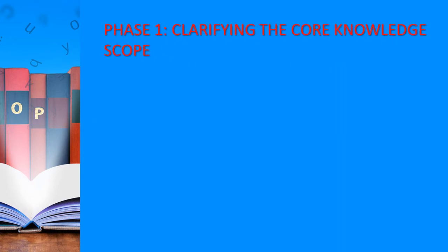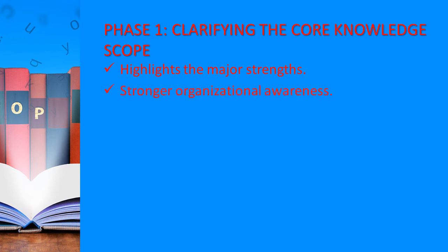Many knowledge organizations fail to recognize the importance of clarifying their core knowledge scope. They allow the business to evolve into a range of areas and specialties which may or may not be of value. Clarifying the nature and scope of core knowledge highlights the major strengths which contribute to business outcomes. Most importantly, the process builds stronger organizational awareness of what business activities are to be encouraged, what areas are most strongly supported, and what capabilities should be evident and shared across the work community. The main question in this first phase is: what knowledge should be available to support the core business?